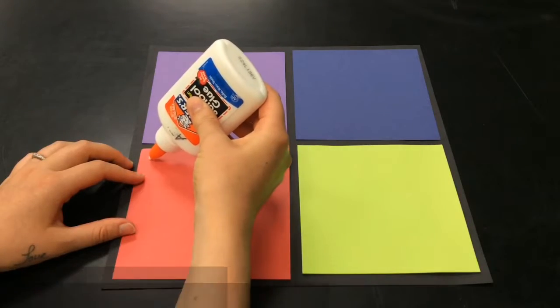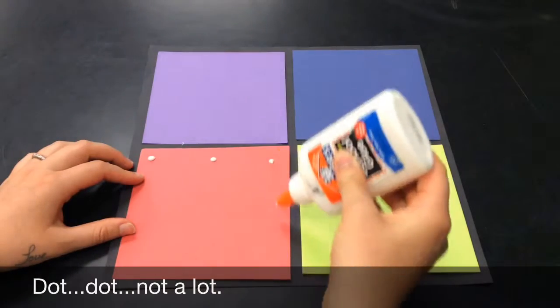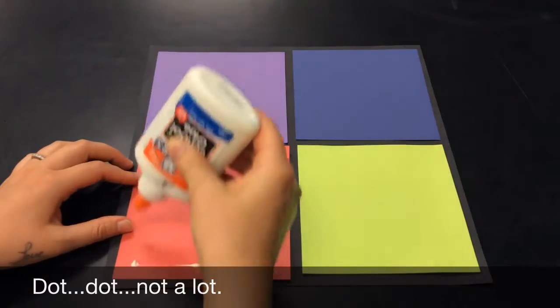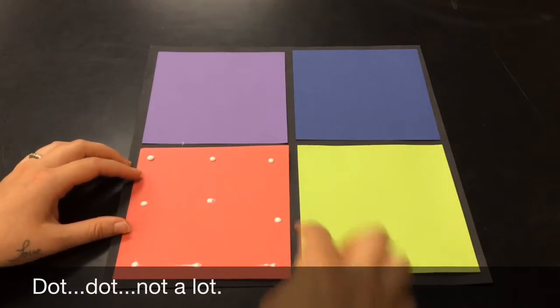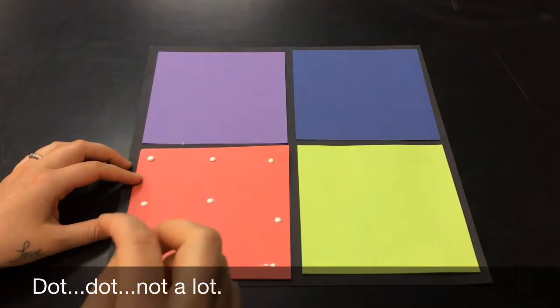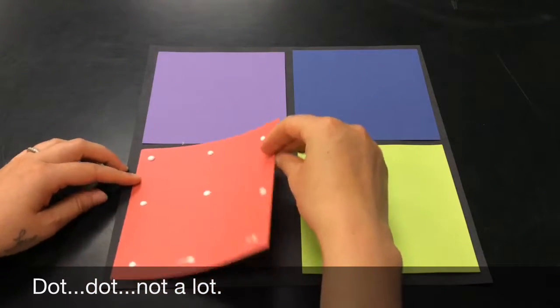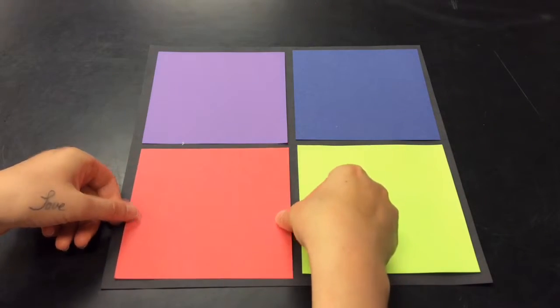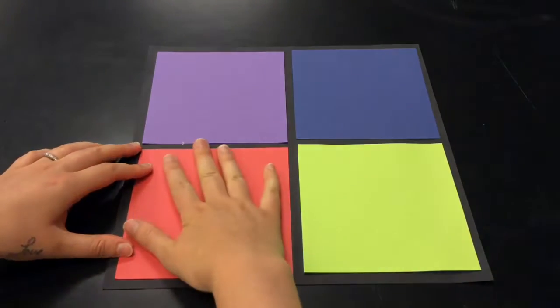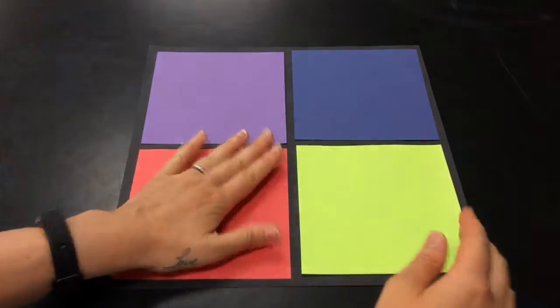So I'm just going to start dot dot not a lot. You only need a few dots around maybe a dot in the middle like that. We don't want it too close to the edge because then we get oozy goozies. I'm going to turn it over and place it down carefully and kind of give it a push there.